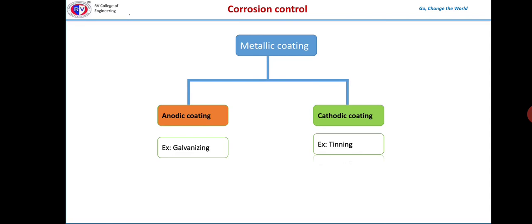Galvanization is a familiar example for anodic coating and is extensively used to protect iron and steel objects.